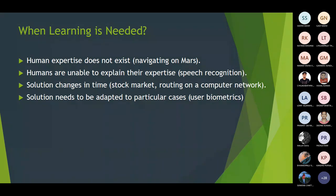In speech recognition, humans are unable to explain their expertise because it is very difficult to recognize a speech over the phone. Nowadays many different technologies allow changing the tone of voice, making it very difficult for humans to recognize voices. Machine learning applications or algorithms can successfully recognize voices over telephone or other medium.